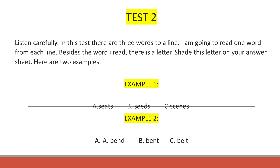Test 2. Listen carefully. In this test, there are three words to a line. I'm going to read one word from this line. Beside the word I read, there is a letter. Share this letter on your answer sheet. Here are two examples.